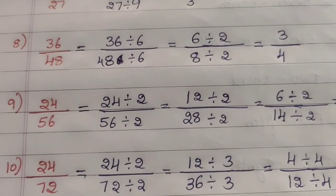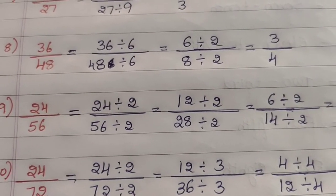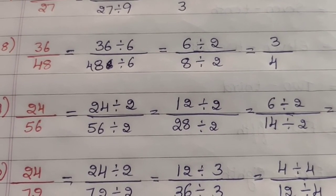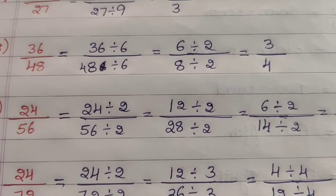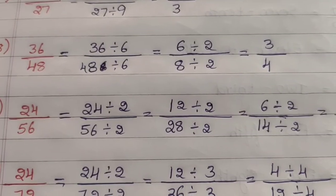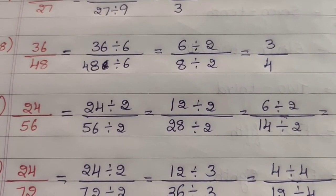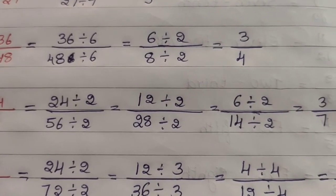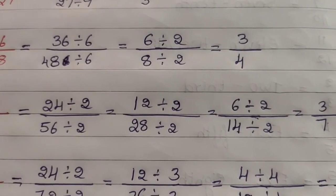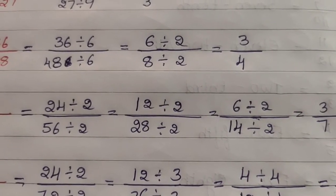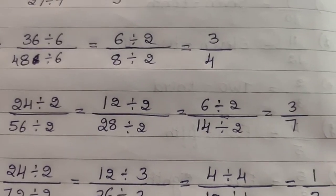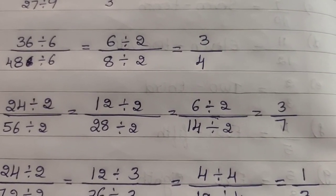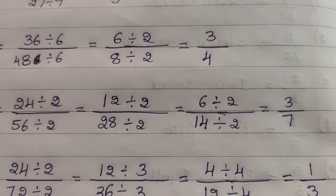Question 9 — 24/56: divide by 2: (24÷2)/(56÷2) — 2 twelves are 24, 2 twenty-eights are 56 — giving 12/28. Divide by 2 again: (12÷2)/(28÷2) — 2 sixes are 12, 2 fourteens are 28 — giving 6/14. Divide by 2 once more: (6÷2)/(14÷2) — 2 threes are 6, 2 sevens are 14 — giving 3/7.